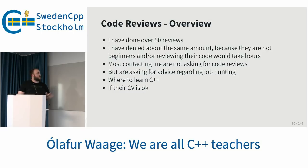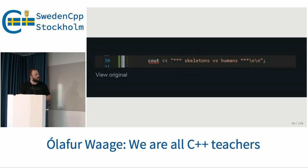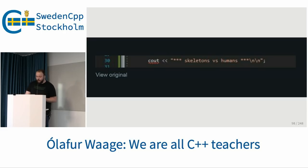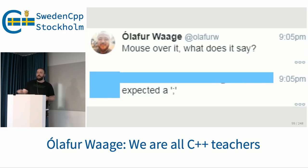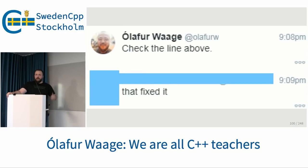Most of them weren't full code reviews — most of them were like: 'Do you know why calc has a red underline on it?' Here's the code, cout, skeletons versus humans, someone is making a game. I asked them, mouse over it, what does it say? 'I expected a semicolon.' Check the line above. That fixed it. These are very common to get — someone just Googling 'learn C++ help' and then they find my Twitter.